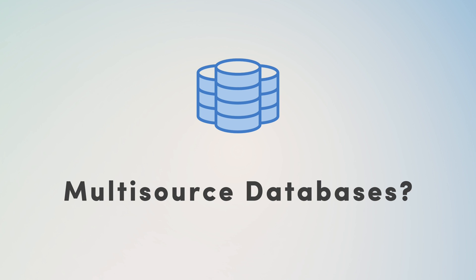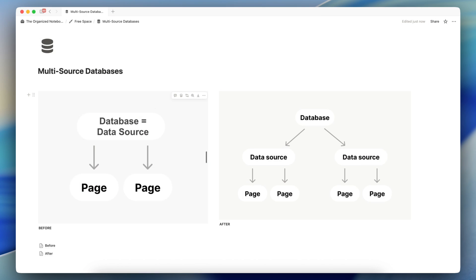To get started with multi-source databases, I wanted to first show exactly what has changed with the database structure. A Notion database before only had one data source. A database equaled the data source itself, and it would have different pages inside that have key properties such as statuses, due dates, and so on. So you could have a task database, and that data source would be the task data source — database always equaled the data source.